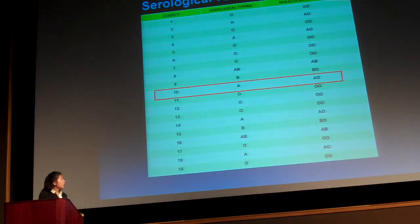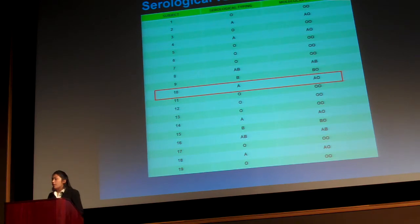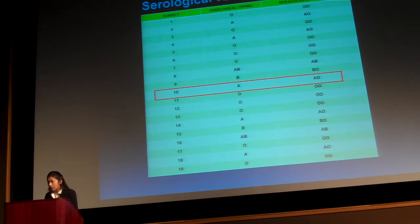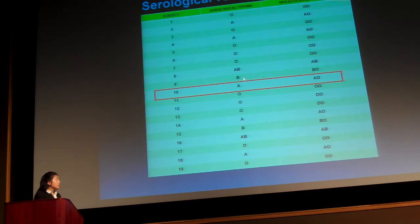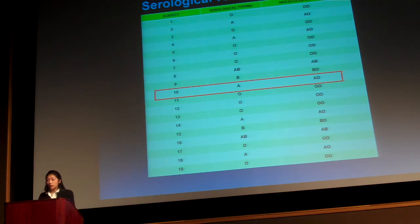Here is a chart comparing the serological typing results to my molecular genotyping results. I found 100% accuracy match between molecular genotyping and serological typing, as well as the ability to detect a second hidden recessive allele not found by serological typing. For example, subject 10 was typed as type A by serology, but molecular genotyping revealed they are type AO — exposing the recessive O allele that the serological test missed.